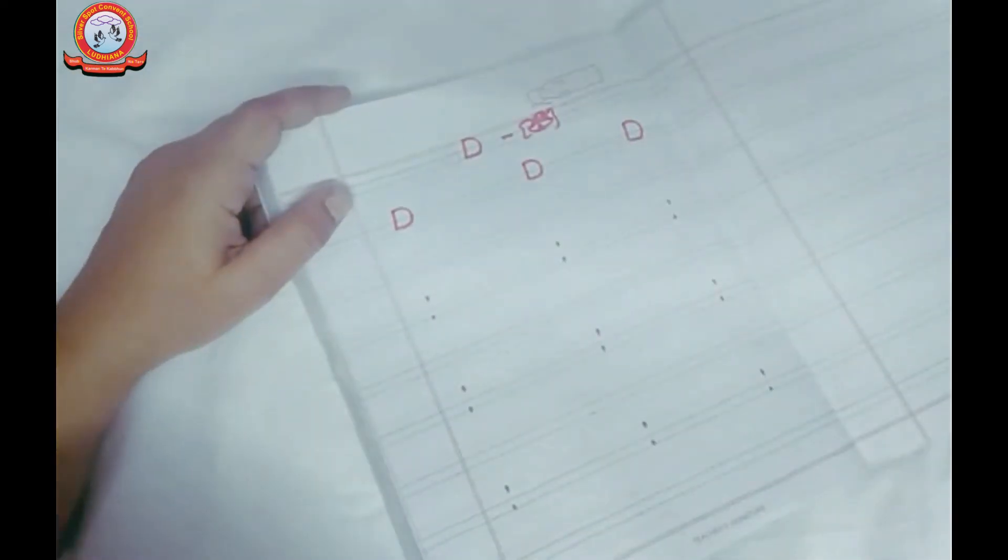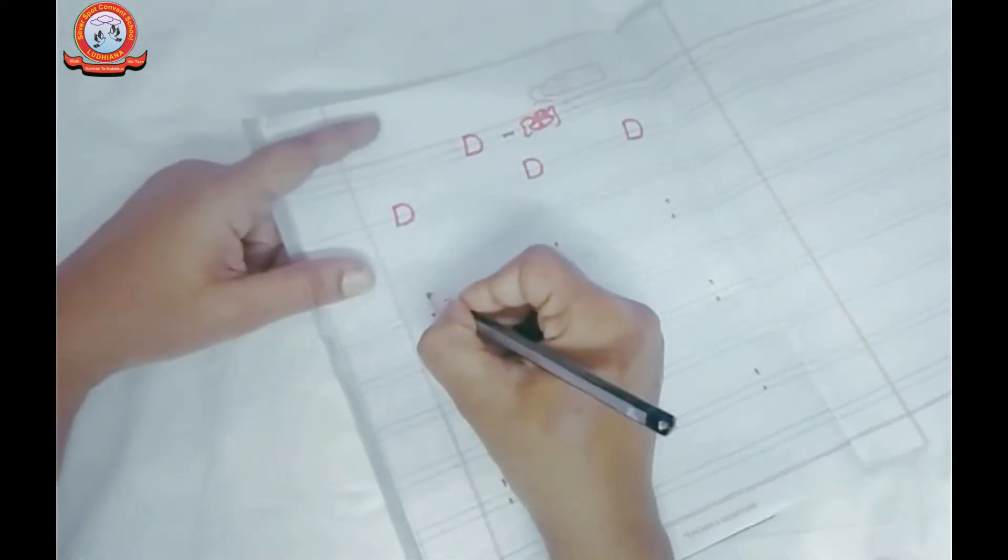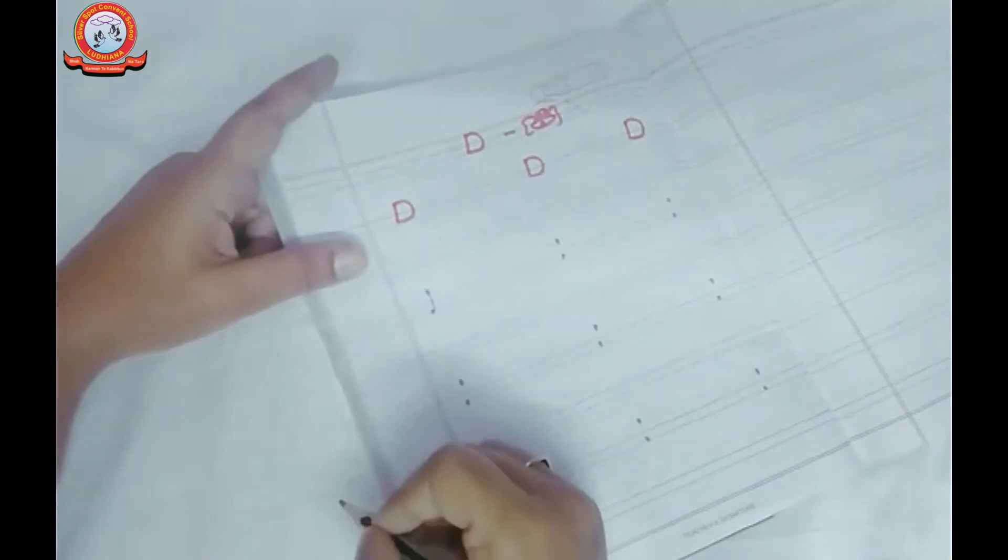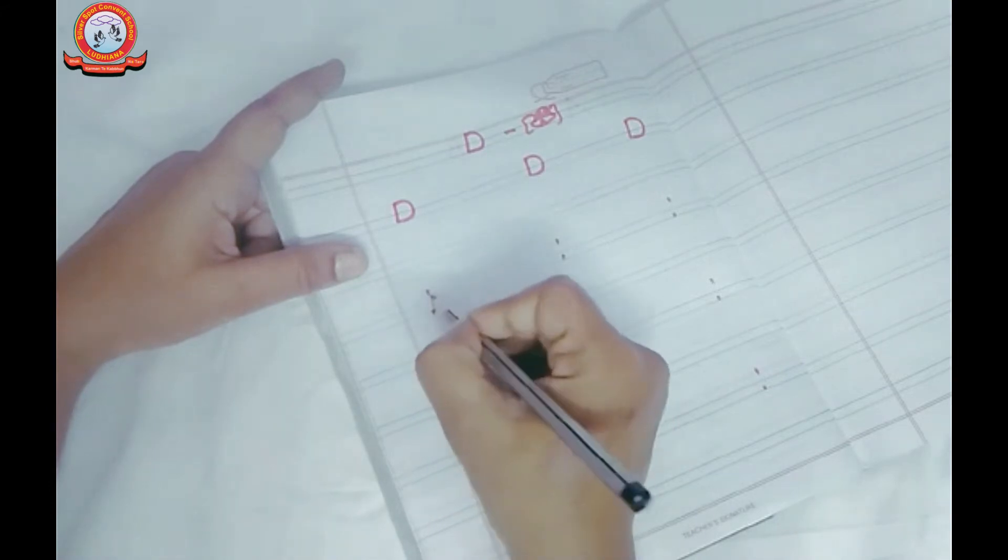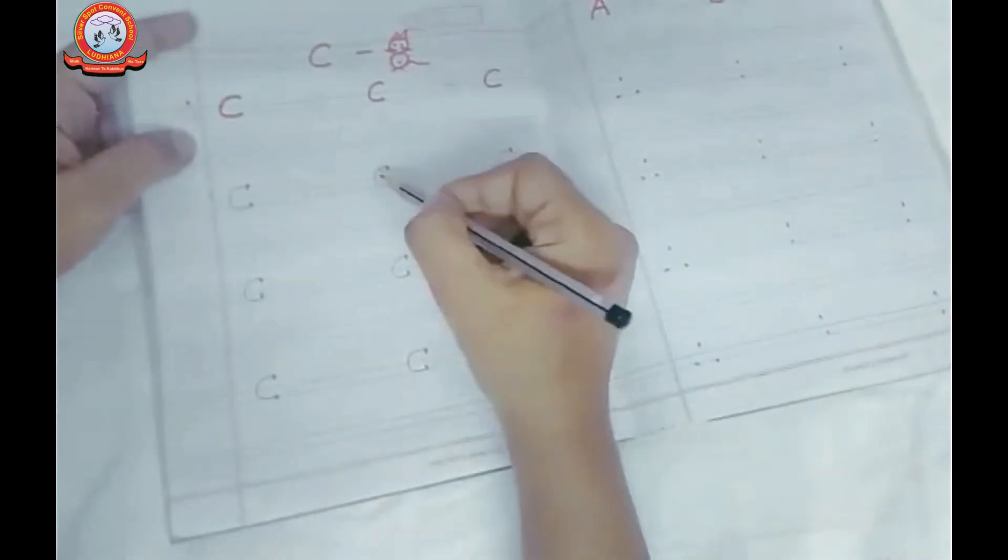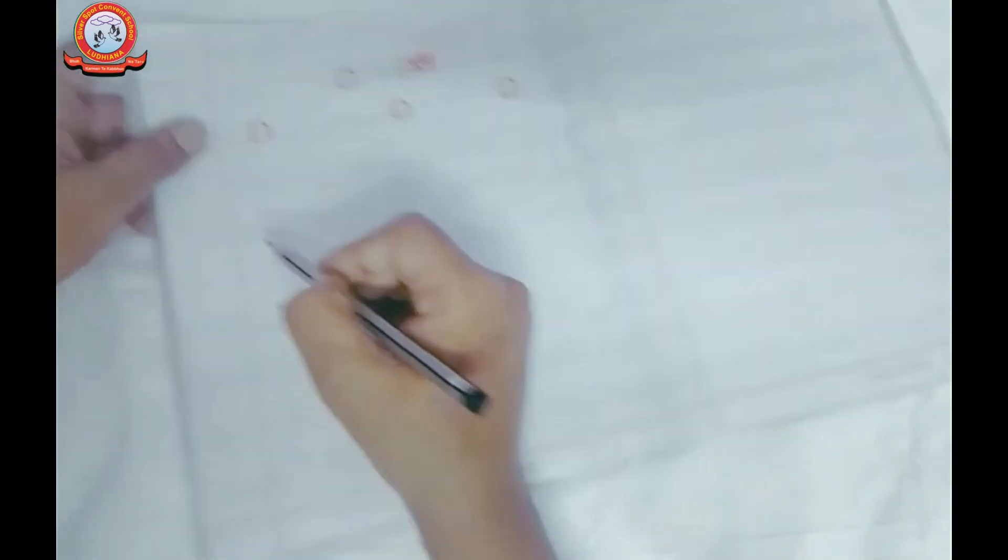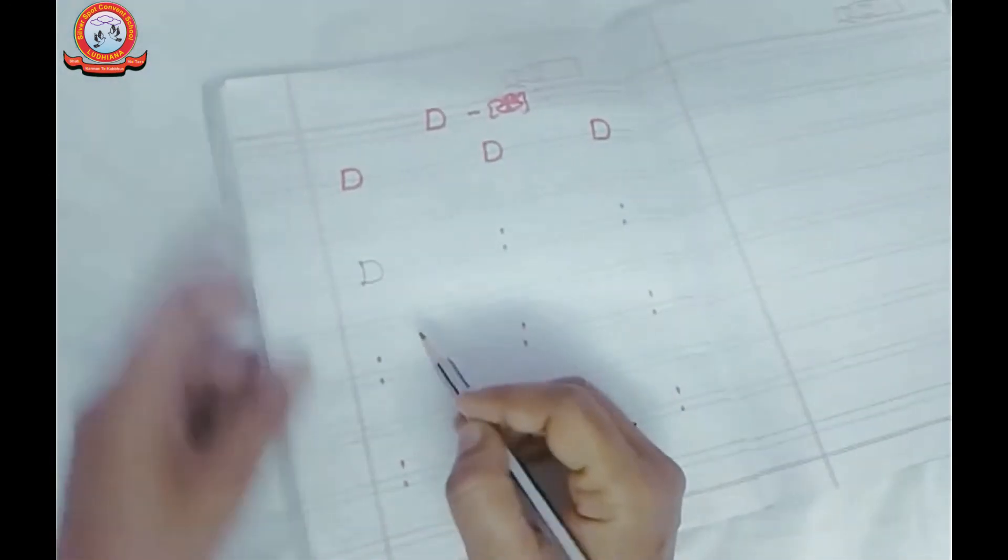और इसको लिखना कैसे है? See, पहले हम ऐसे standing line बनाएंगे. Okay? फिर इस dot से इस dot को touch करेंगे. और ऐसे बनाएंगे. जैसे हमने पीछे ऐसे C बनाया था ना? इस dot को इस dot के साथ touch किया था ना? तो अब हम यहाँ पर ऐसे इस तरफ घुमाया था. अब हम इस तरफ घुमाएंगे. तो letter D बन जाएगा. Okay?